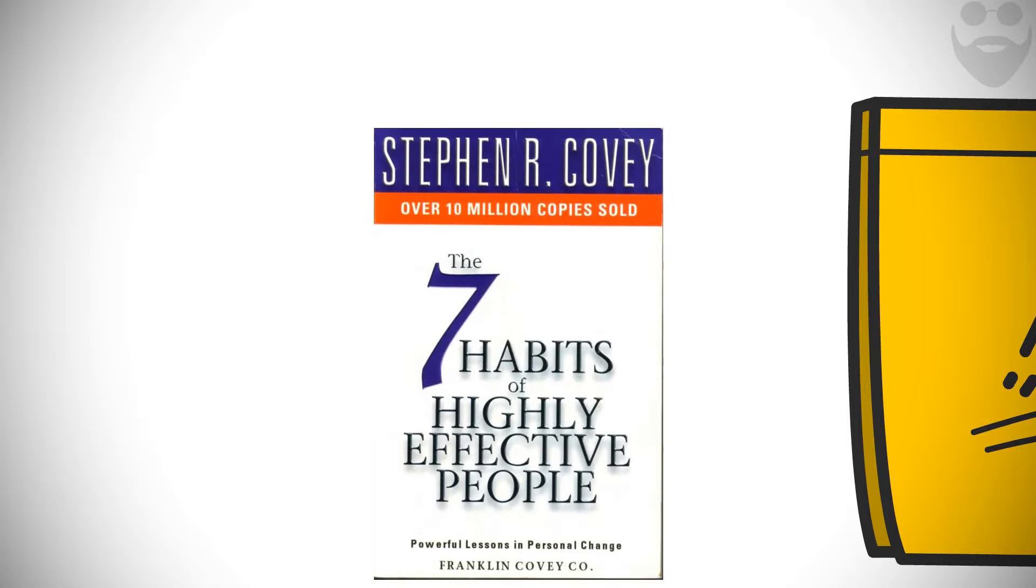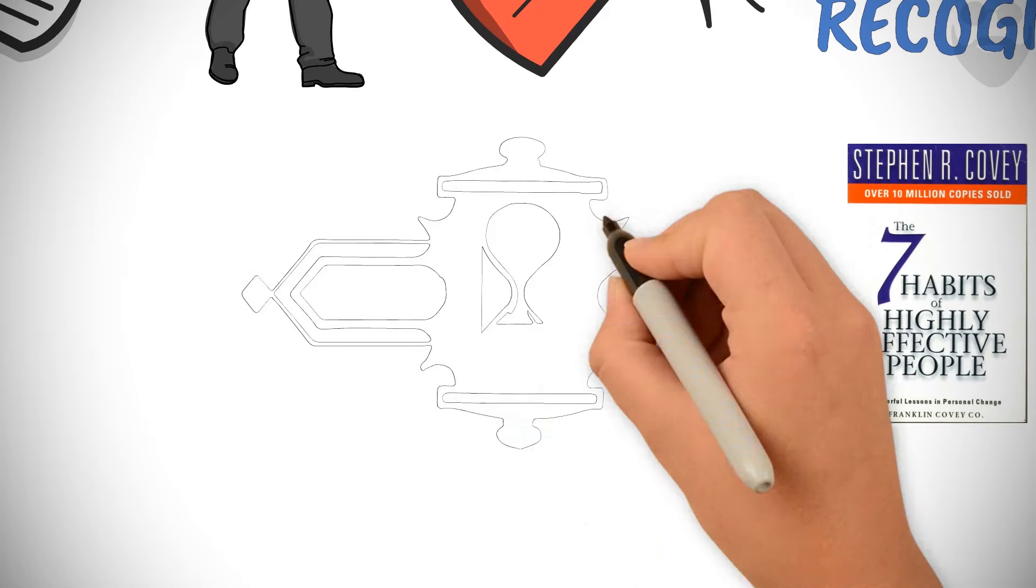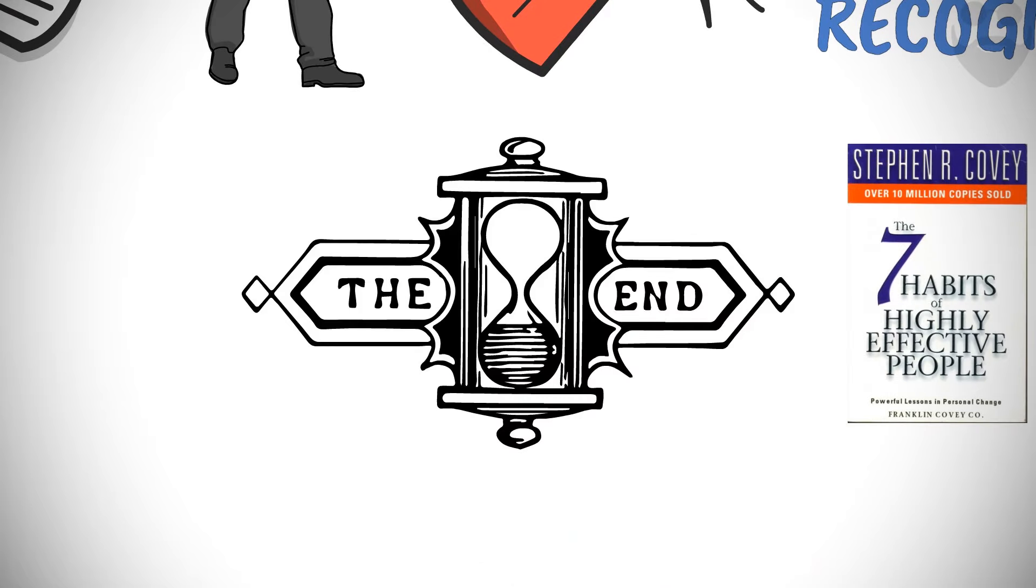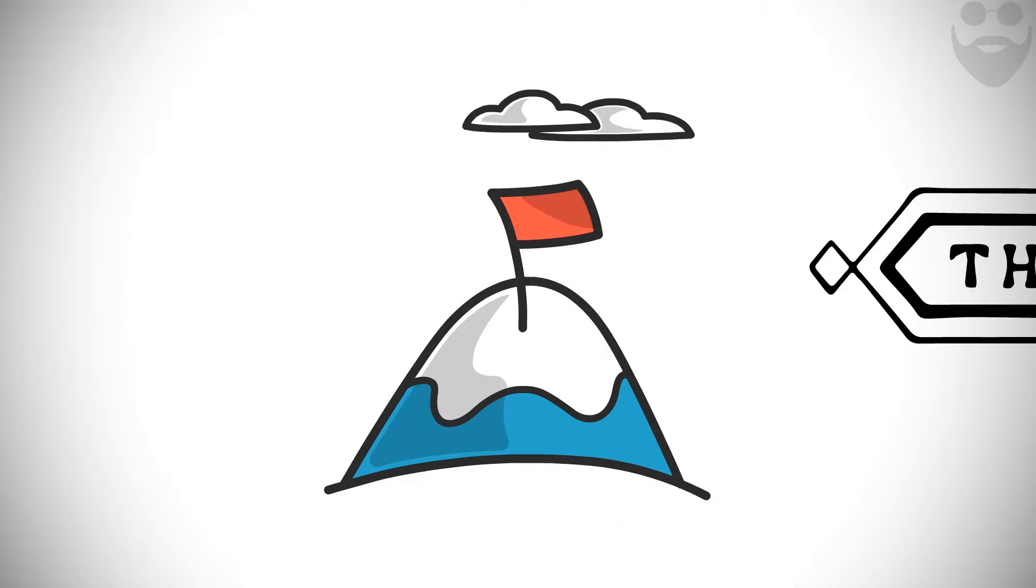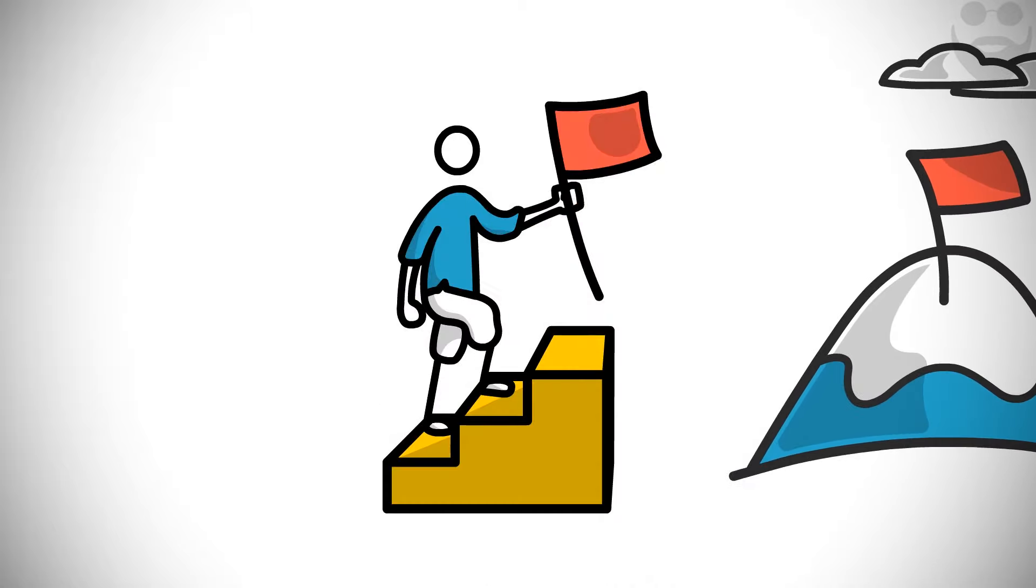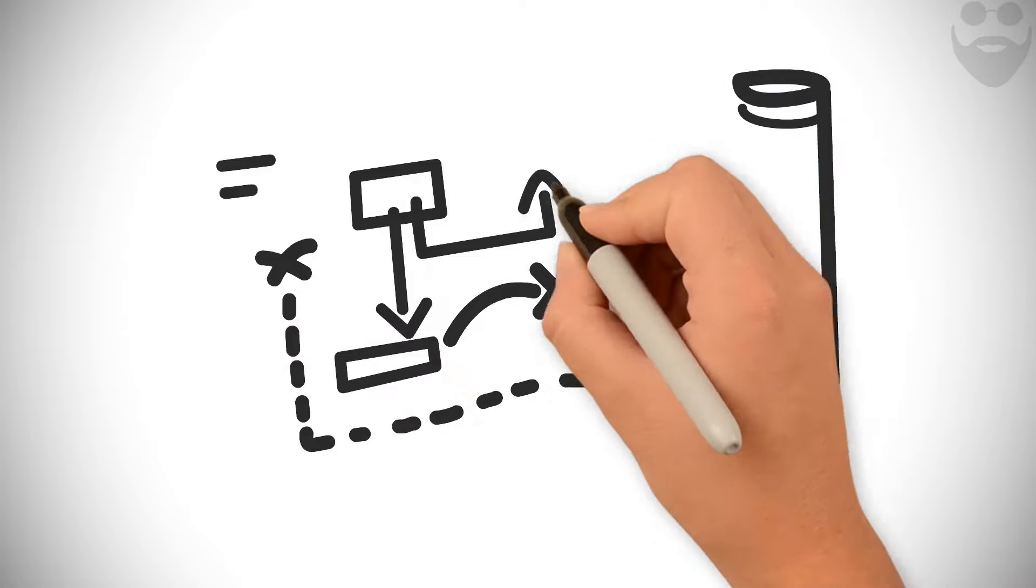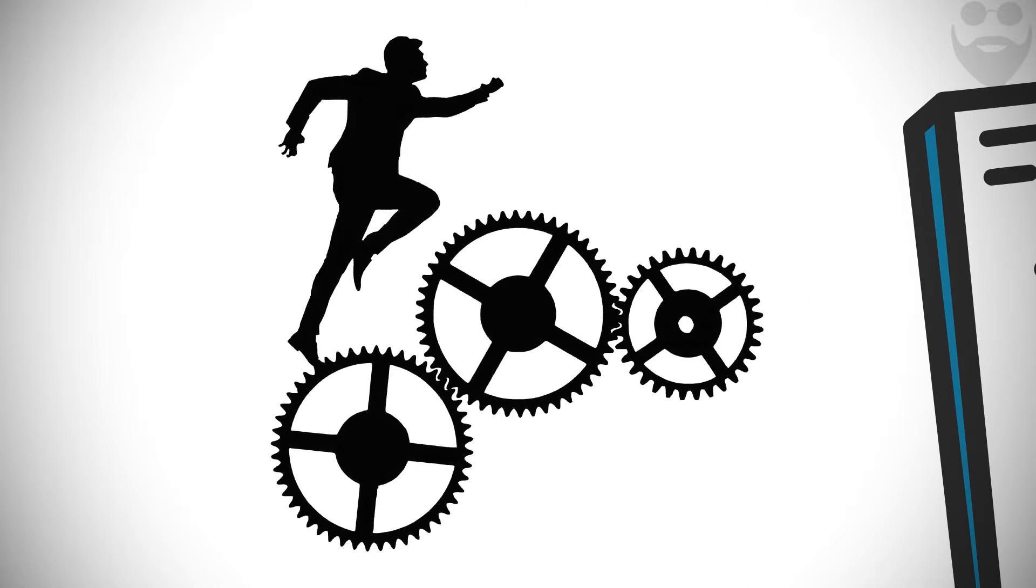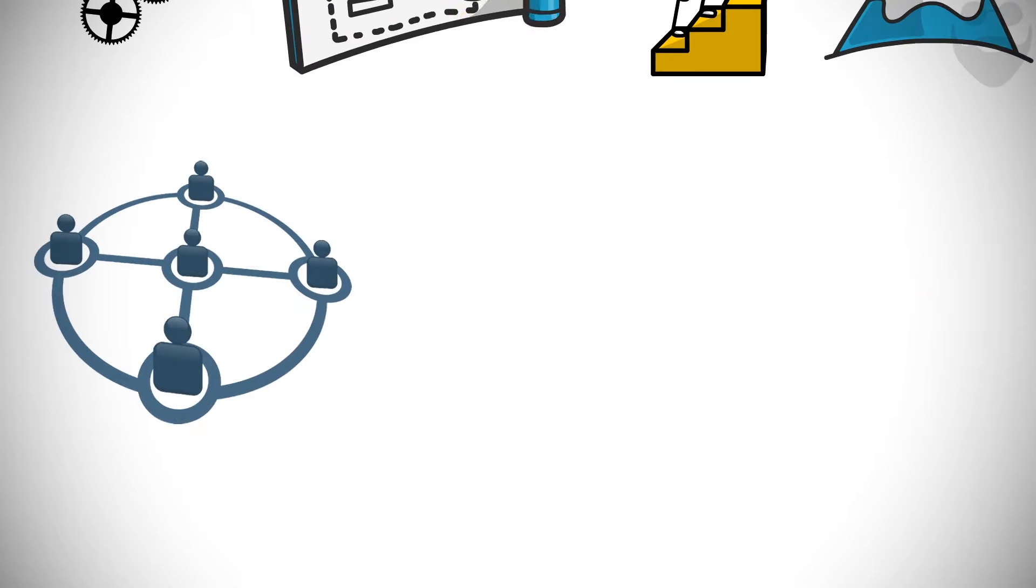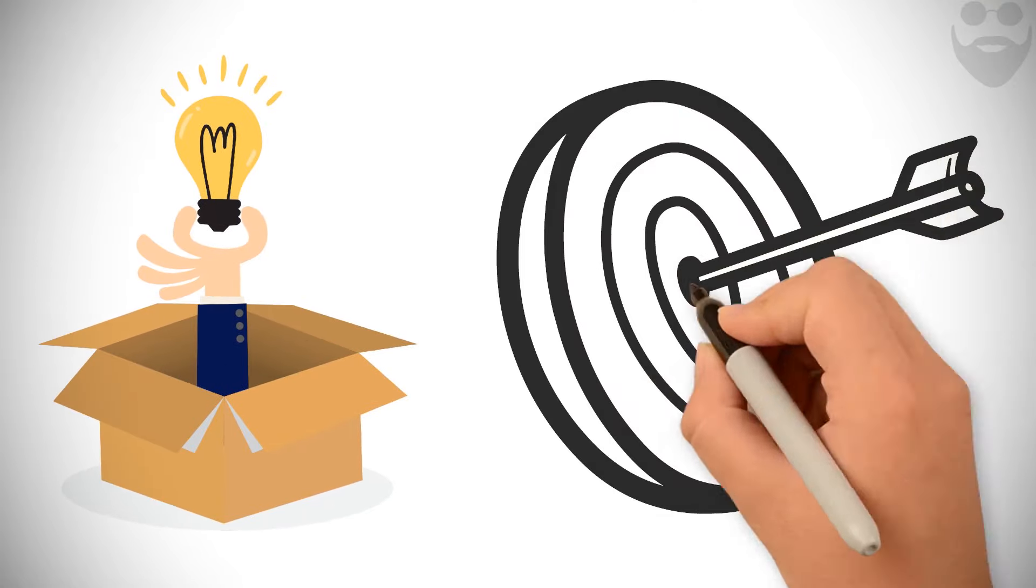Habit 2 from The 7 Habits of Highly Effective People suggests that in everything we do, we should begin with the end in mind. Start with a clear destination. That way, we can make sure the steps we're taking are in the right direction. Beginning with the end in mind is also extremely important for businesses. Being a manager is about optimizing for efficiency, but being a leader is about setting the right strategic vision for your organization in the first place and asking, What are we trying to accomplish?